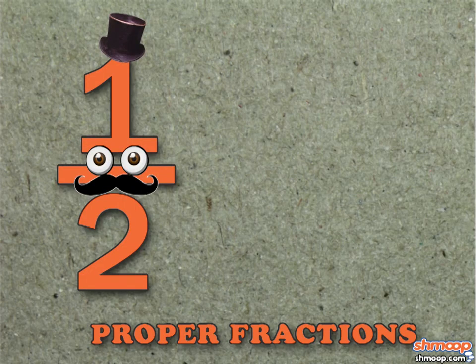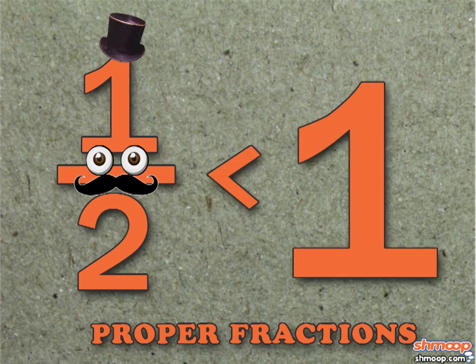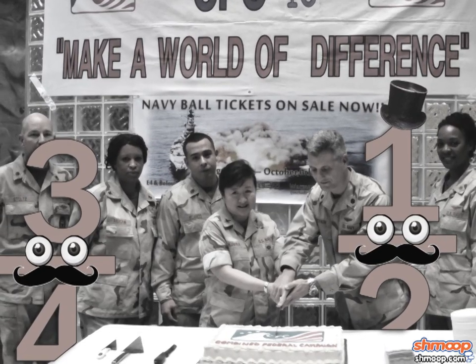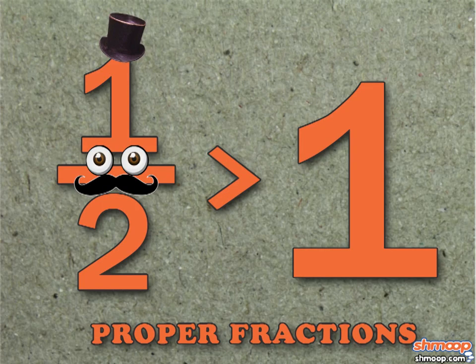Proper fractions have a numerator that's smaller than the denominator, which means they're always less than one. Proper fractions also donate to charities and volunteer in soup kitchens. They know they're not greater than anyone else around them.